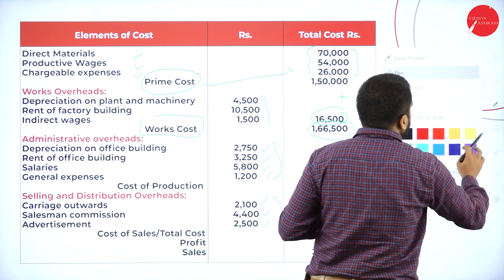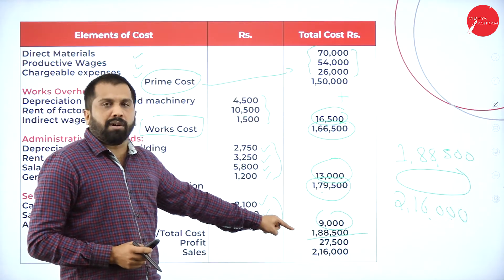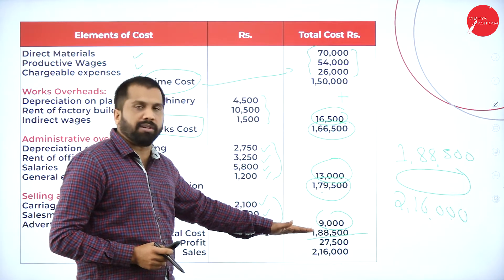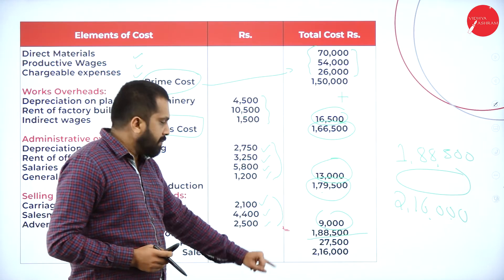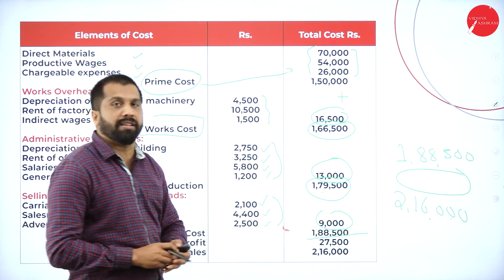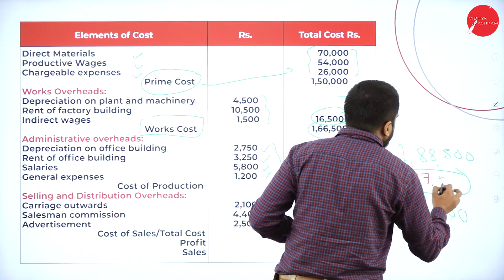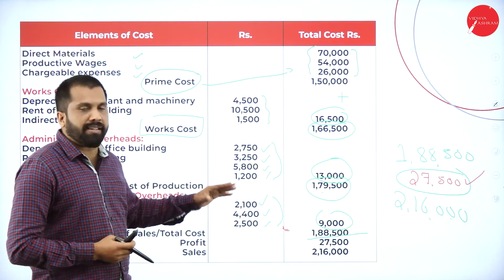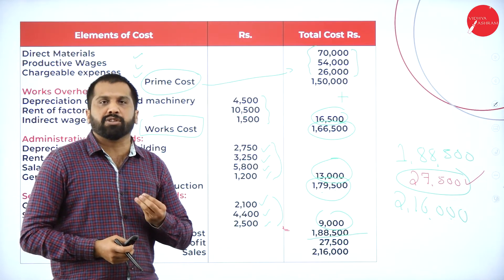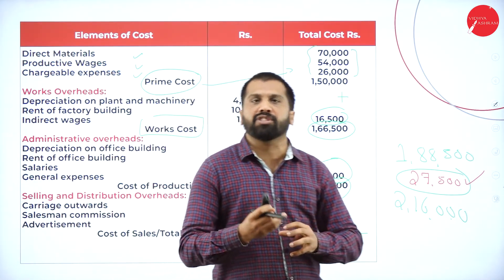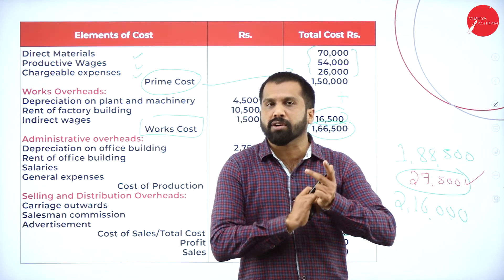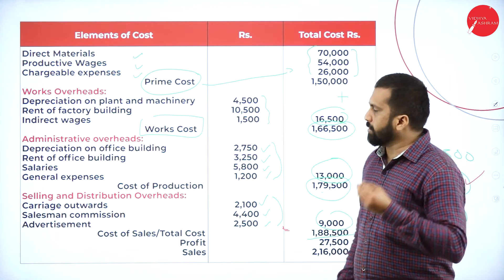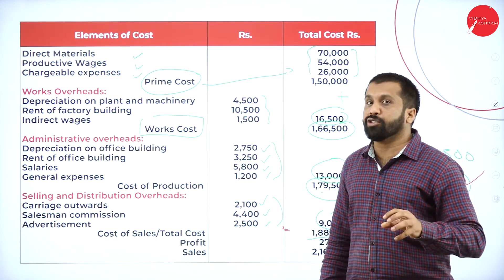Again, to repeat: you know your total cost — 1,88,500. You know your selling price — 2,16,000. From selling price minus total cost, you will get your profit: 2,16,000 minus 1,88,500 equals 27,500. Like this you are supposed to do your cost sheet. Whatever I have taken is a simple problem — maybe 30 to 40% of your actual problem. Along with this, you will get extra adjustments like opening stock of work in progress, closing stock of work in progress, and there may be 4 or 5 items in each heading.